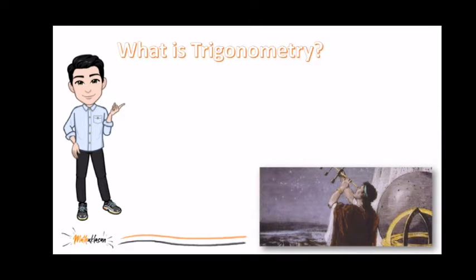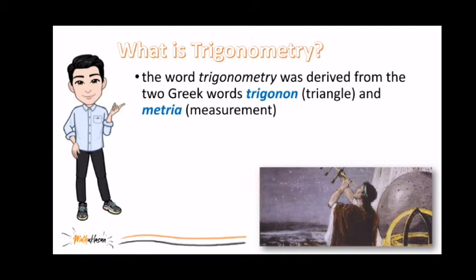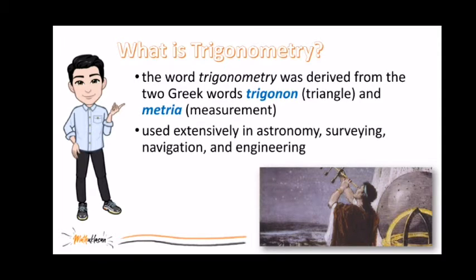And probably you noticed that I always mention the word triangle since the beginning of the video. It's because the word trigonometry was derived from the two Greek words trigonon and metria, which means triangle and measurement respectively. So literally, trigonometry means measurements of triangles. And it is used extensively in astronomy, surveying, navigation, and engineering. To understand triangles, we need to define angles first.